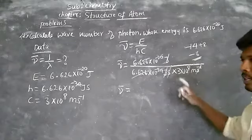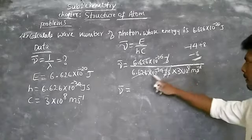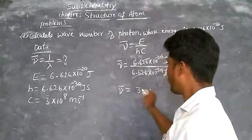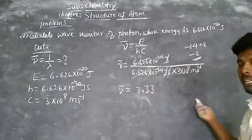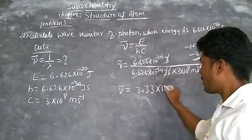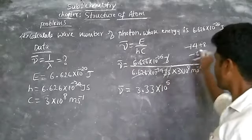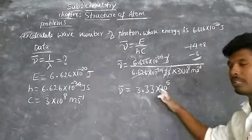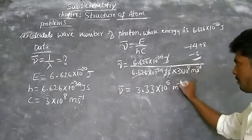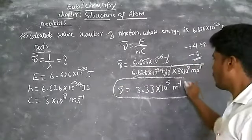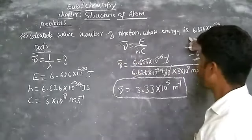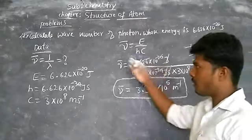1 divided by 3 is 0.333, so the coefficient becomes 3.33 × 10 shifting powers. The final wave number result is approximately 3.33 × 10⁶ per meter.